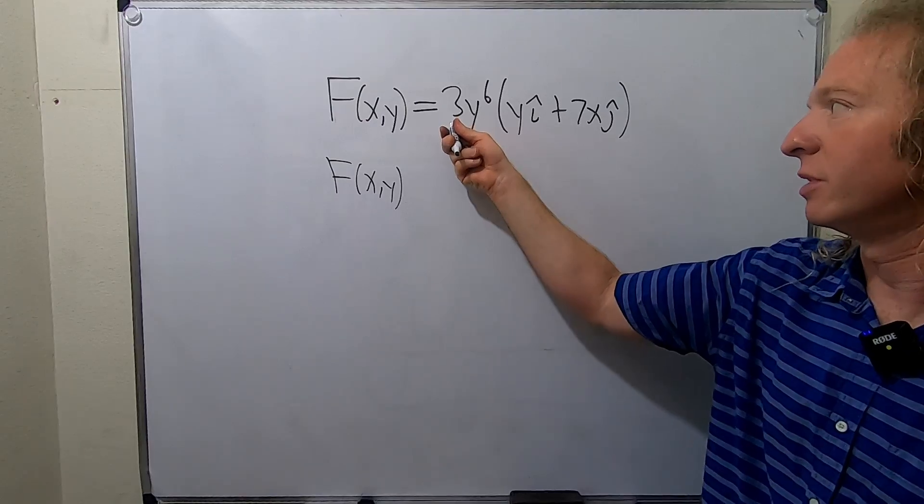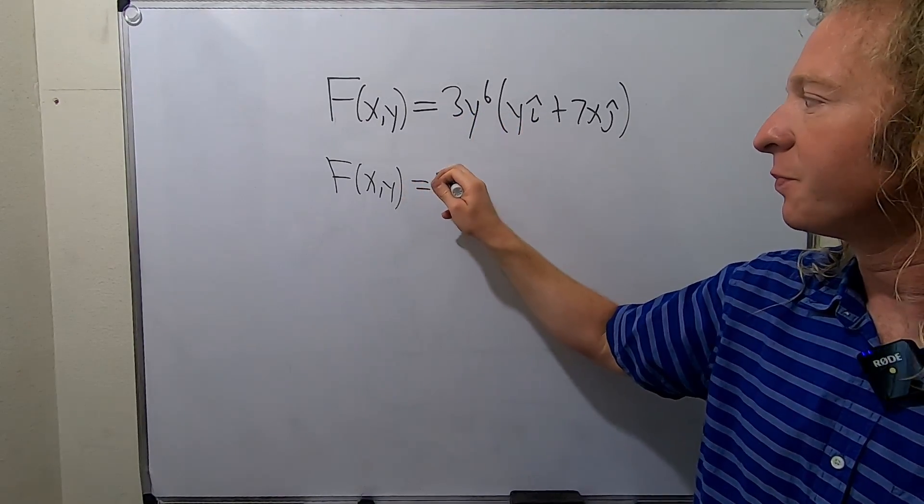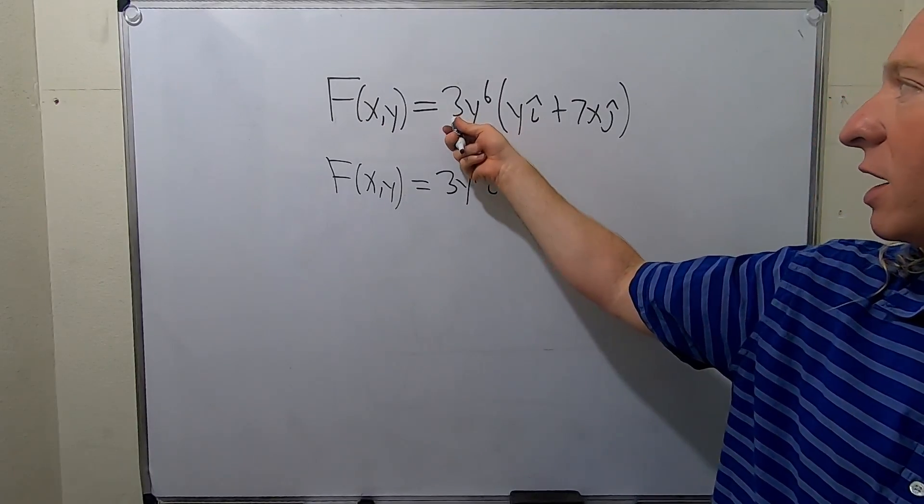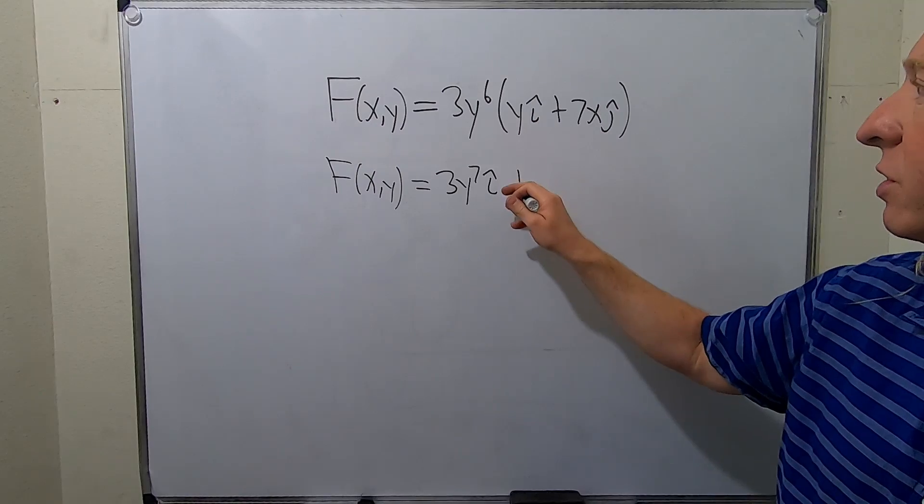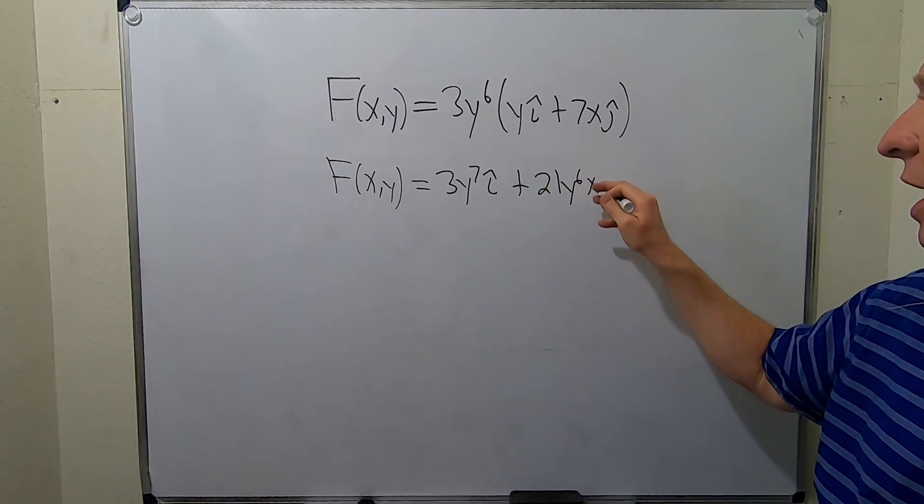So the first step, maybe, is to distribute this. 3y^6 times y gives us 3y^7 i-hat. And then 3y^6 times this—3 times 7 is 21—that's going to give us 21y^6 x j-hat.